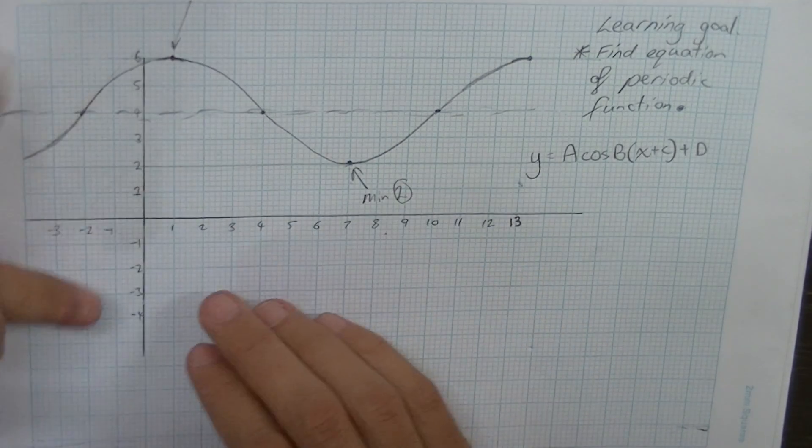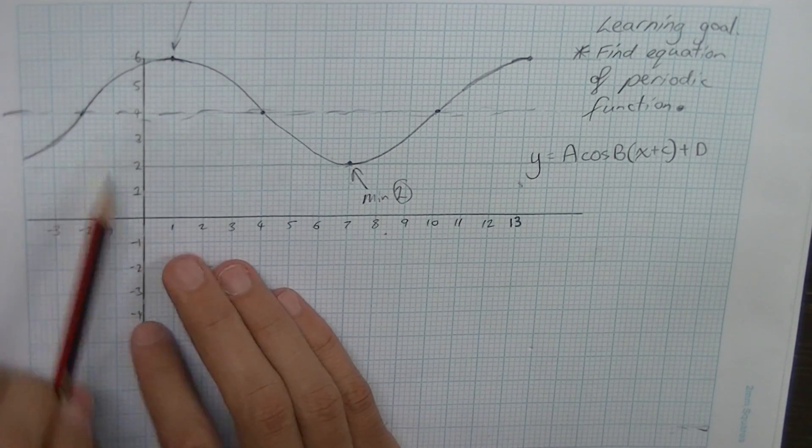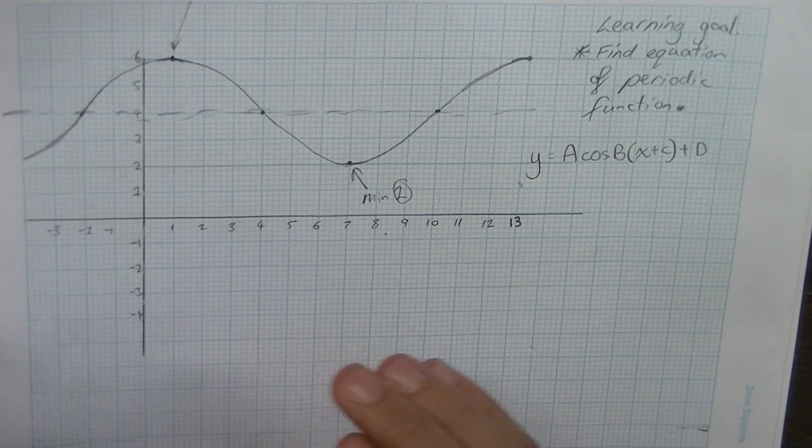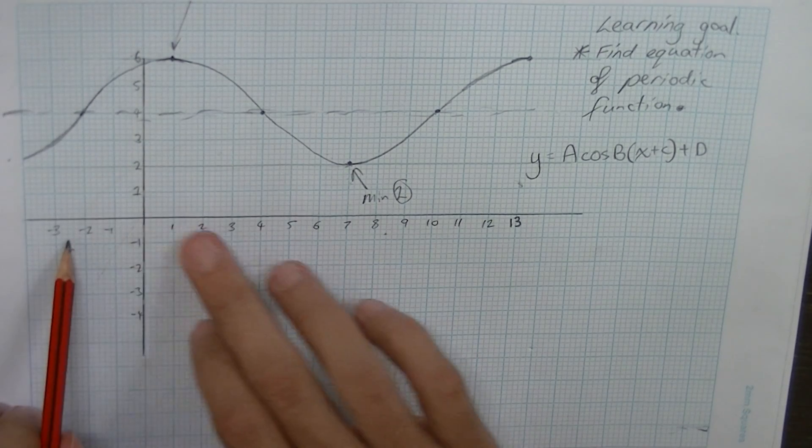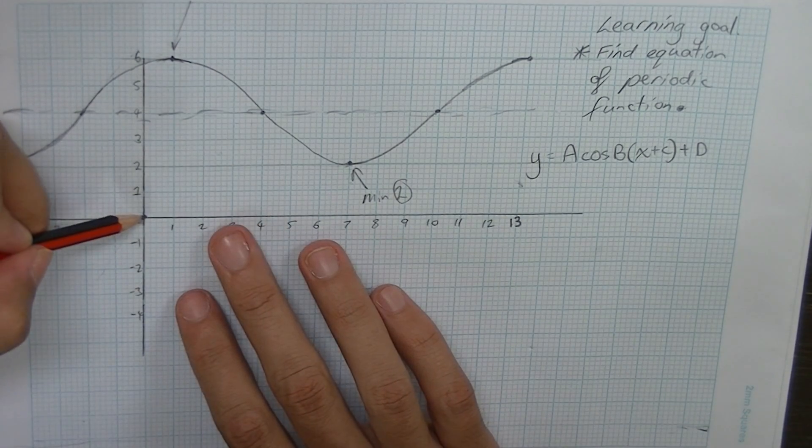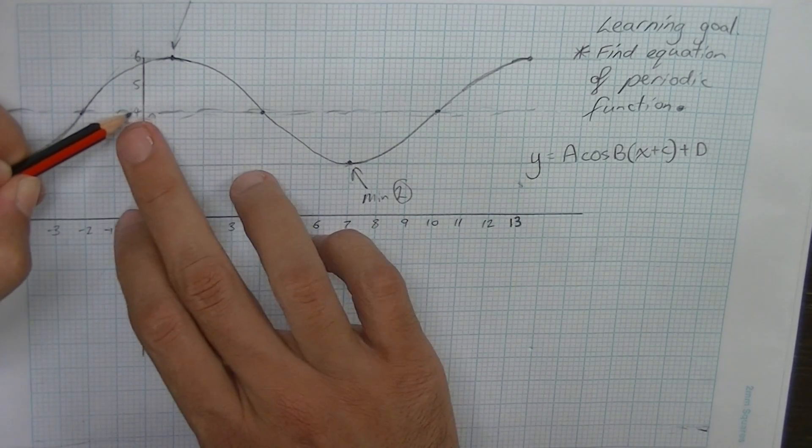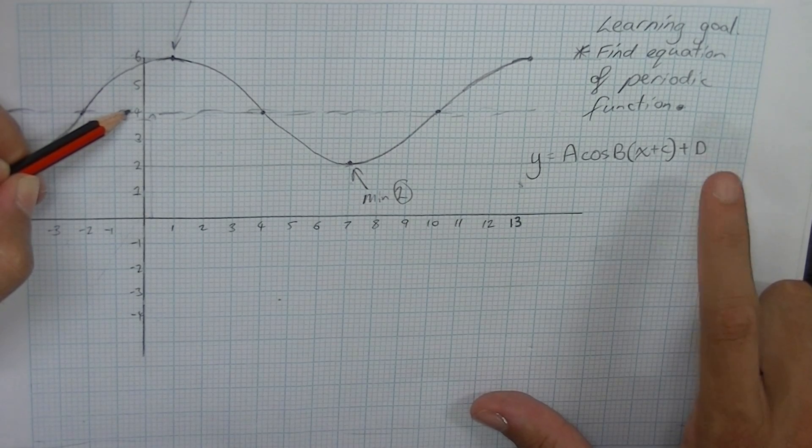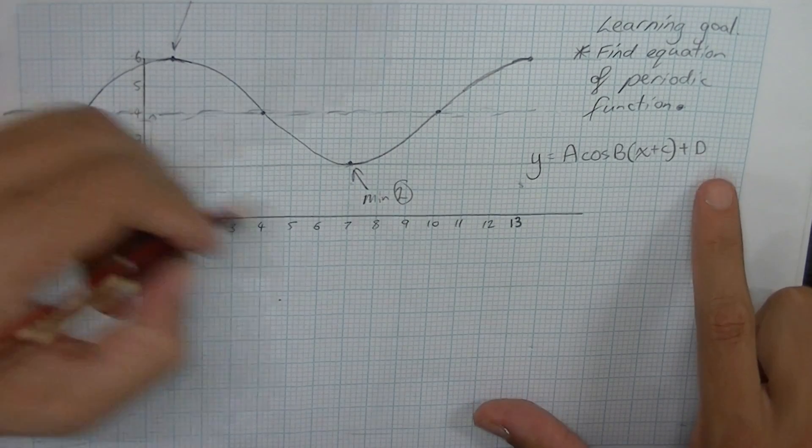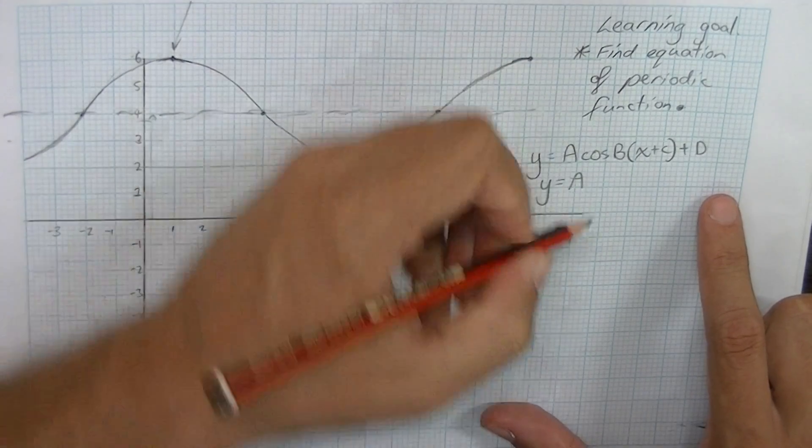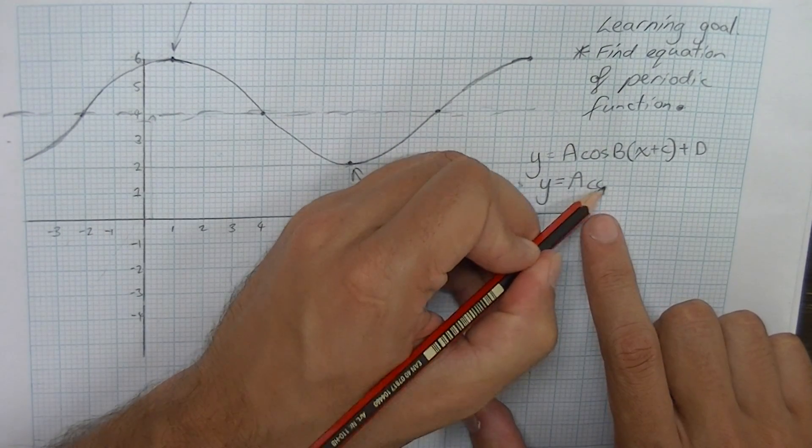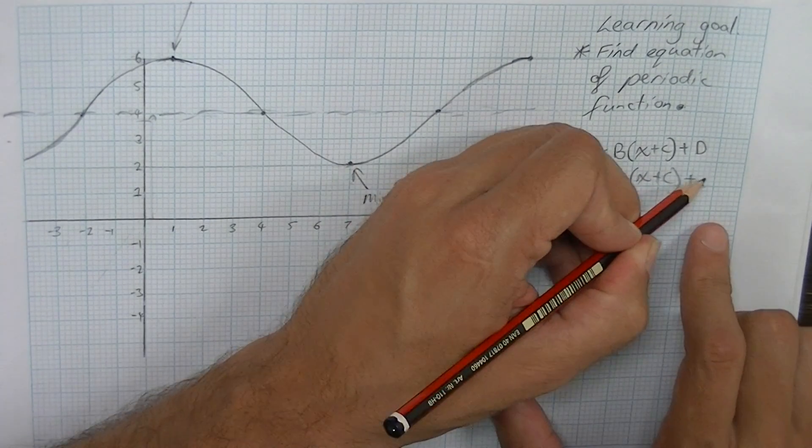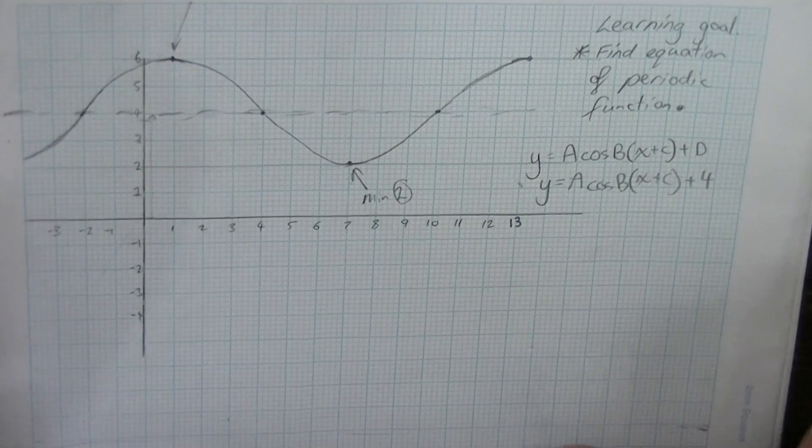Now that middle is how far this function has moved up. Because remember periodic functions, well at least the most simple periodic functions happen about the x axis. So this one has moved up from the x axis to 4. Now that's represented by our d value. So straight away we can see that our d value is 4. So we've already got a piece of the puzzle here. We know that this equation is y equals a cos b x plus c plus 4. So that's one piece.